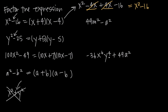Looking at two more complex examples: this one is similar to 100x squared minus 49. The square root of 49 is 7, the square root of m squared is m, and because 49 is multiplied by m squared, we multiply the 7 and the m. Then the square root of a squared is just a, and we add one and subtract the other.